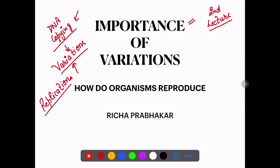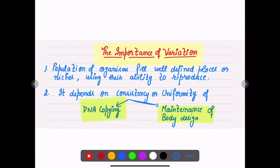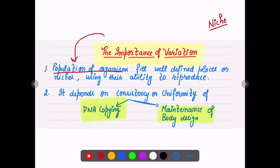Today we will see what is the importance of these variations in a particular species or in individuals. The importance of variation — one key concept is niche population of organisms. When many organisms start living together, their group forms different kinds of groups of a particular species. When they live in an ecosystem, they produce the population. Populations of organisms fill well-defined places, which are called niches.